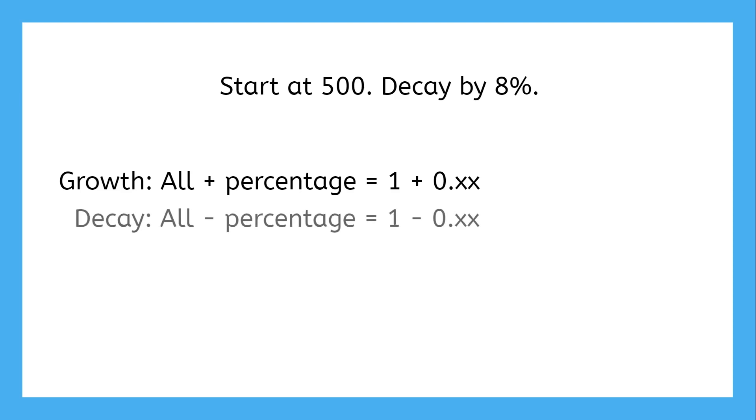Just like amounts can grow exponentially by percentages, an amount can also decay by a percentage. With growth, we say to keep all of the previous amounts and then add the percentage to it. With decay, instead of adding the percentage, the percentage should be subtracted so that it drops the growth factor below one.